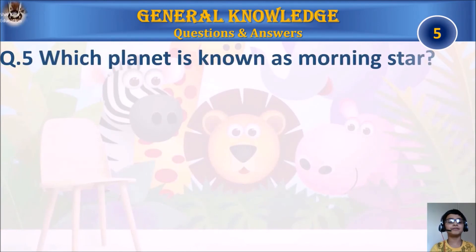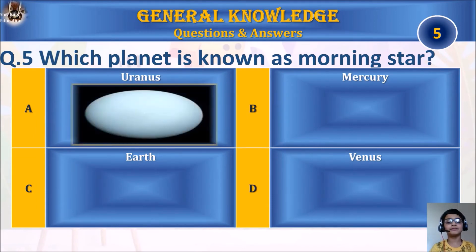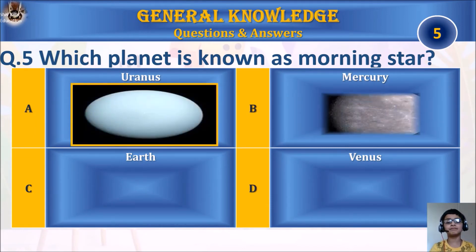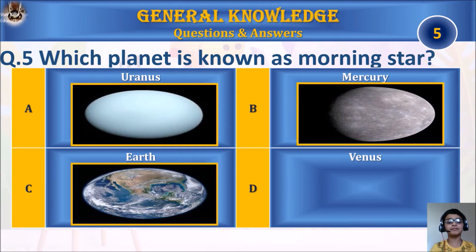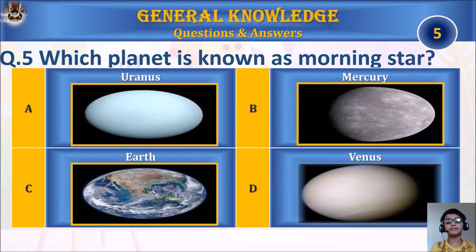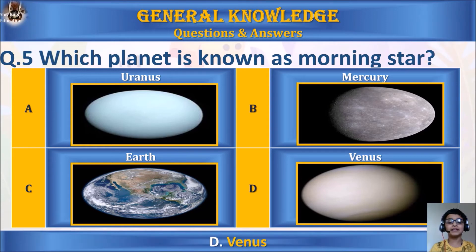Question 5: Which planet is known as the morning star? A. Uranus, B. Mercury, C. Earth, or D. Venus. Your time starts. The answer is D. Venus.